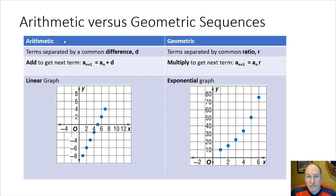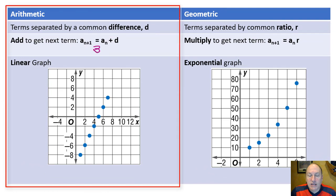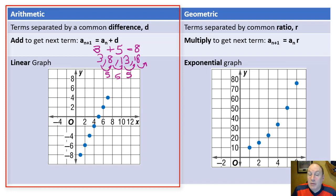The two major types we'll focus on are arithmetic and geometric sequences. Arithmetic sequences grow by addition — each term has a number called the common difference added to it to get the next term. For example, if the first term is 3 and the common difference is 5, the sequence is 3, 8, 13, 18, and so on. Common differences can also be negative, so sequences can get smaller.